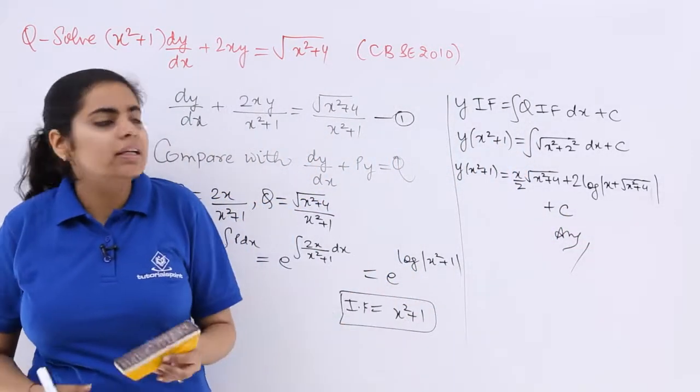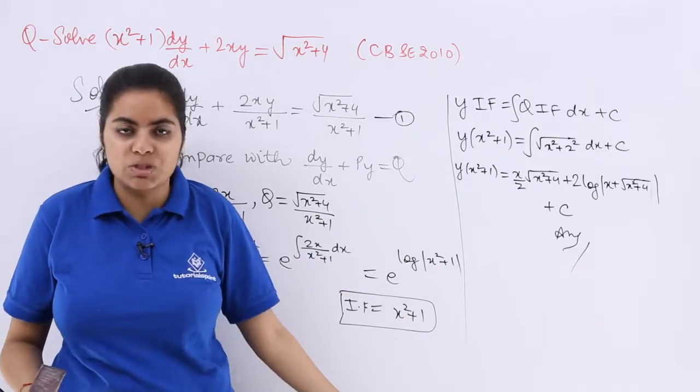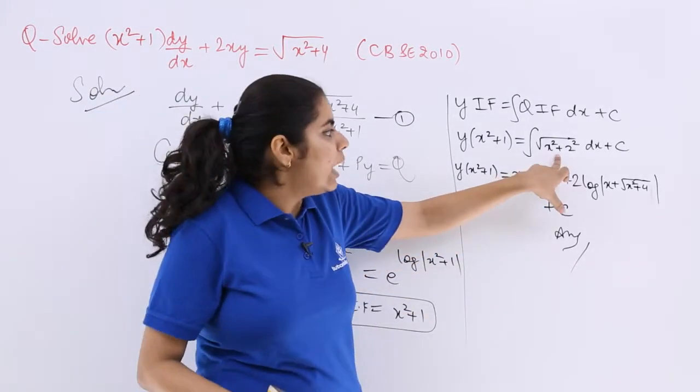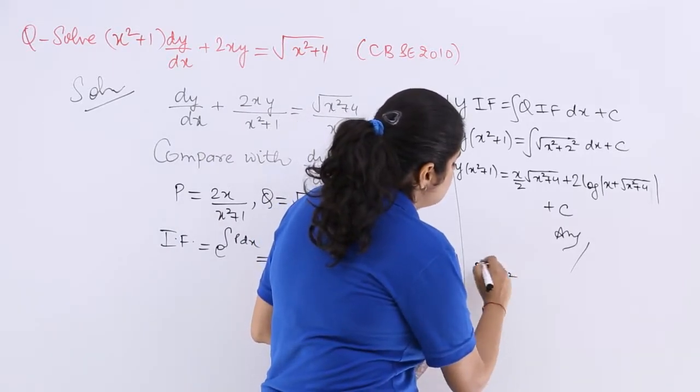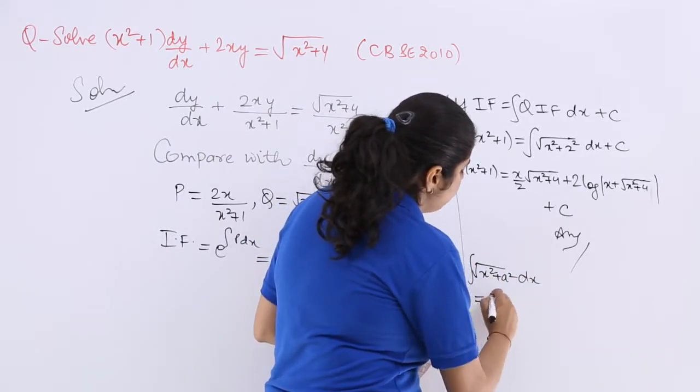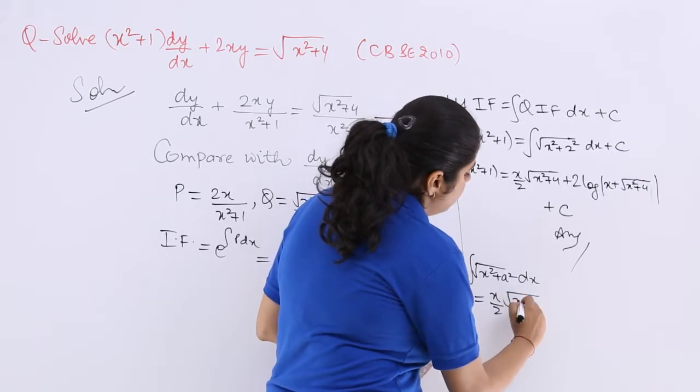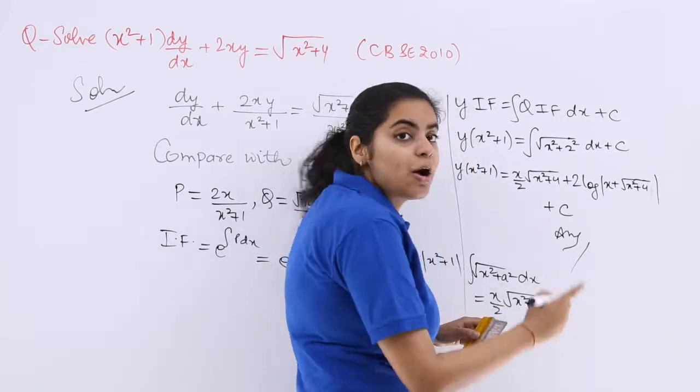Now what are the important things that I need to consider in this question? Firstly, you have to write the formula of √(x²+a²) which you already know. ∫√(x²+a²) dx = x/2 √(x²+a²) + (a²/2) log|x + √(x²+a²)| + c.